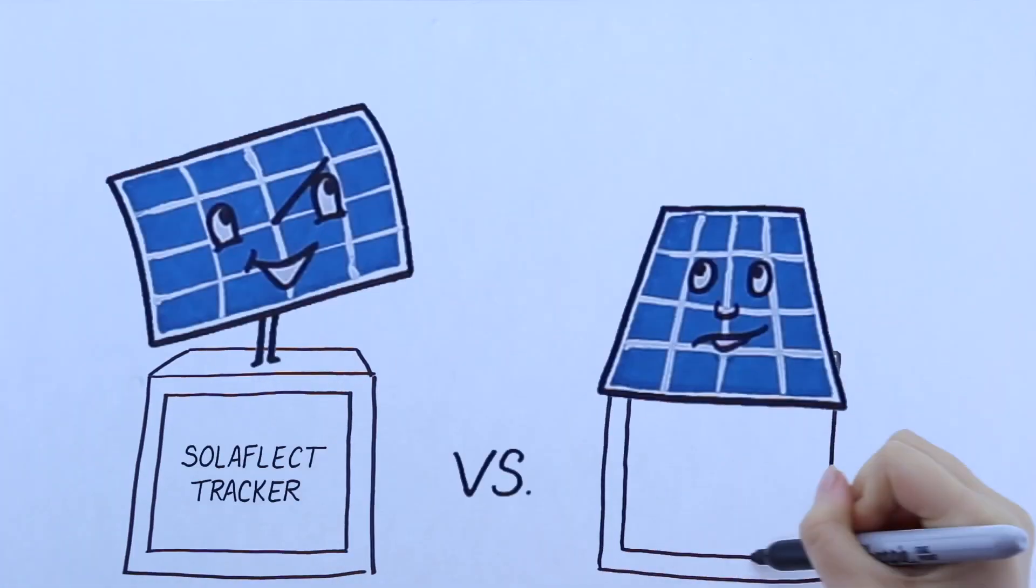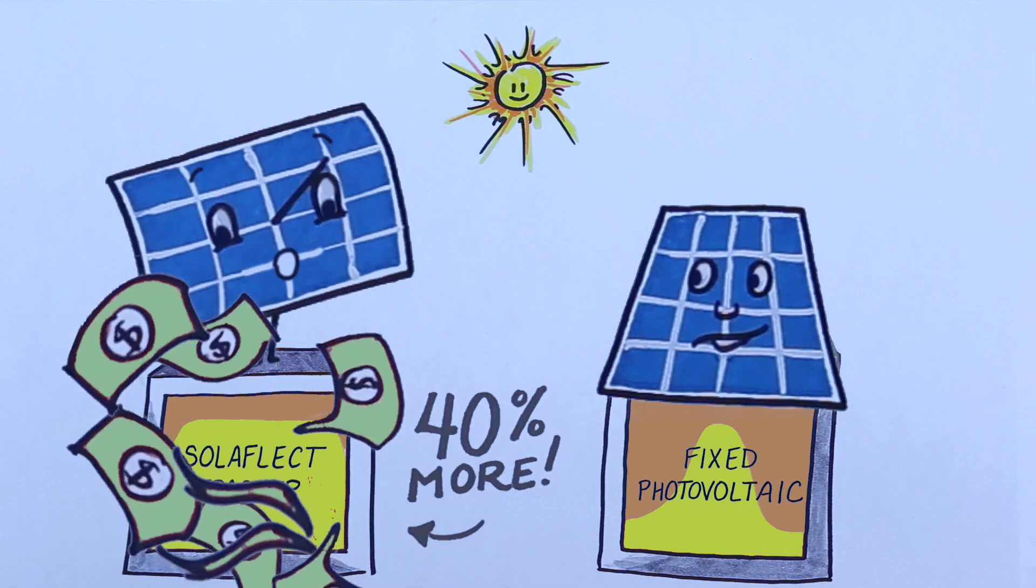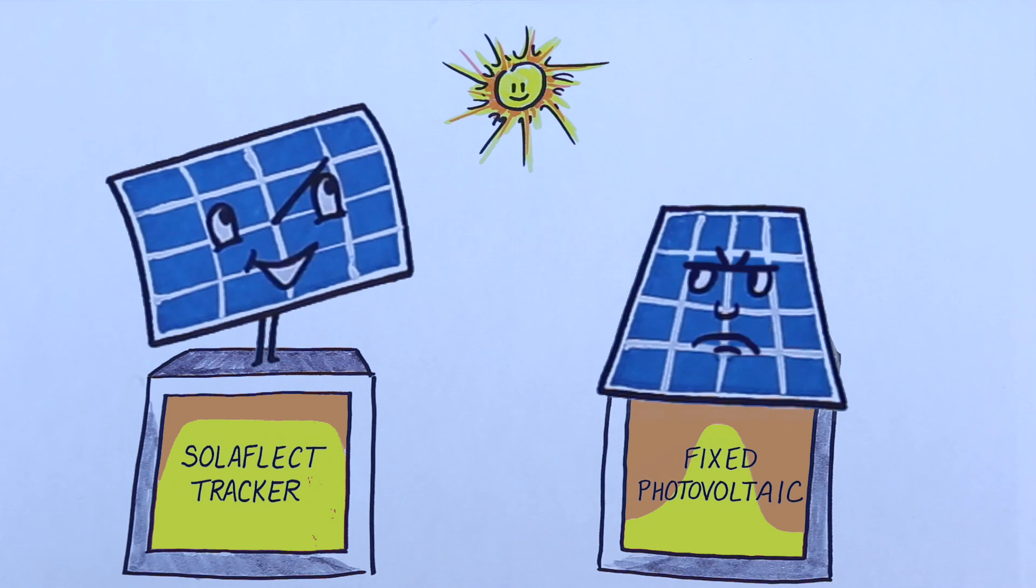With all this tracking efficiency, a Solaflex tracker produces 40% more energy than a fixed panel and saves over $25,000 in energy costs. And you can still get significant federal tax credits.